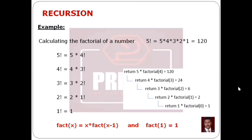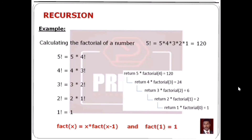If we calculate using the recursive function, factorial of x is equal to x into factorial of x minus 1. This says that 5 factorial equals 5 into 4 factorial, and x factorial equals x into x minus 1 factorial. The base condition is: factorial of 1 is equal to 1. When the input value is 1, the answer is 1 and the recursive process stops.